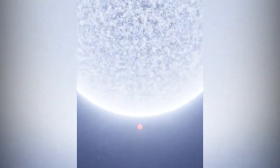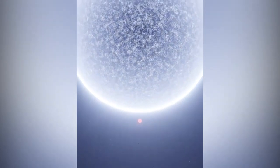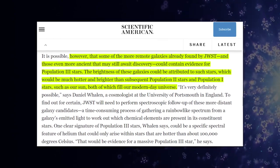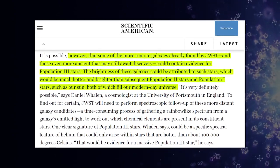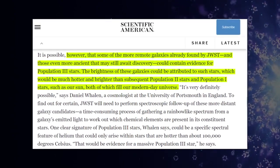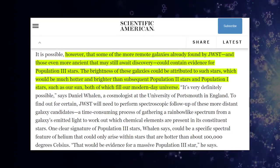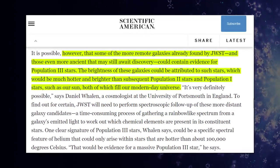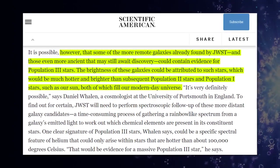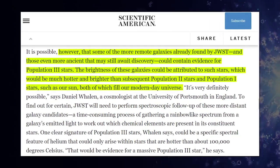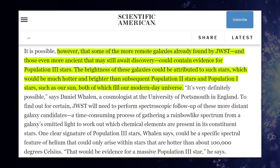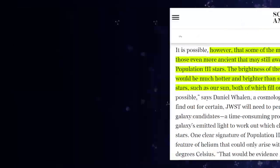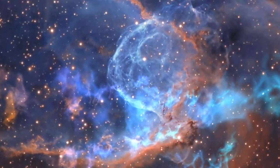However, like the brightest shortest candles, the enormous size of these stars would limit their lifetime to no more than a few million years, making their detection today difficult. However, there is a chance that some of the more distant galaxies already discovered by JWST and those even more ancient that may still await discovery contain evidence for population 3 stars. Such stars, which would be much hotter and brighter than subsequent population 2 stars and population 1 stars like our Sun, could be responsible for the luminosity of these galaxies.